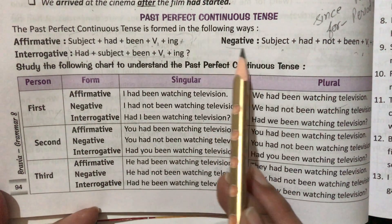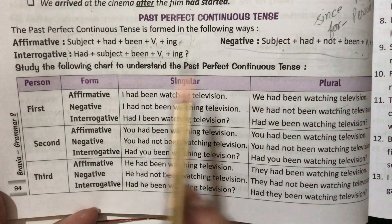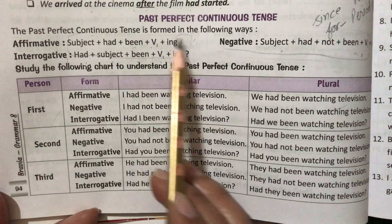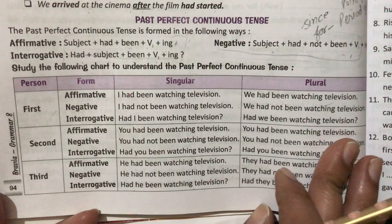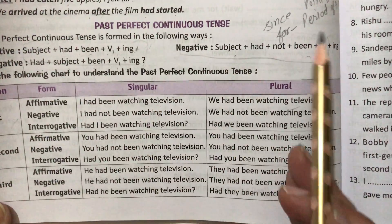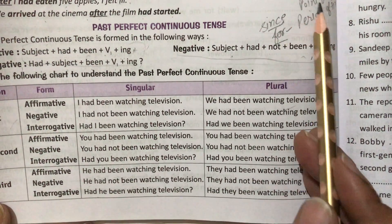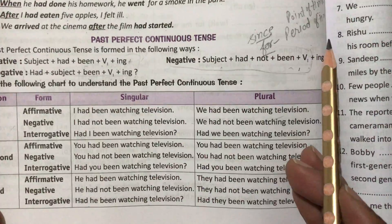Main rule carefully follow kiya gaya hai. Aapka main work kya rahega: ek toh aapko identification pata honi chahiye, second thing jo rule hai, aur third yeh hai ke hum isko kahan kahan use kar sakte hain. Is tense mein — perfect continuous mein — hum since aur for ka bhi use karte hain. Since point of time ke liye aur for period of time ke liye.